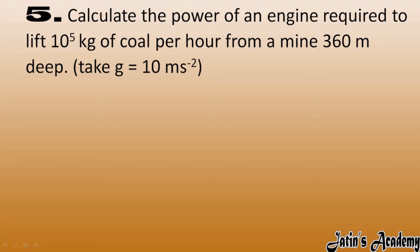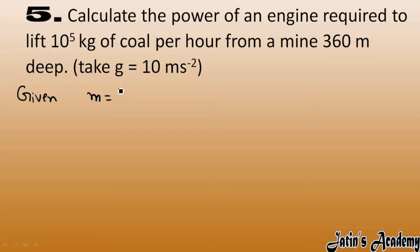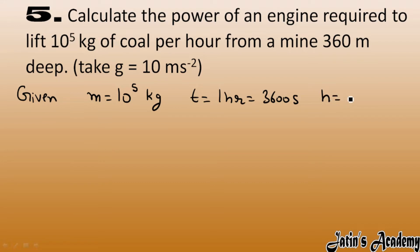Calculate the power of an engine required to lift 10⁵ kg of coal per hour from a mine 360 meters deep. Take g as 10 m/s². The given quantities are: mass of coal = 10⁵ kg, time = one hour = 3600 seconds, and height (depth) = 360 meters.